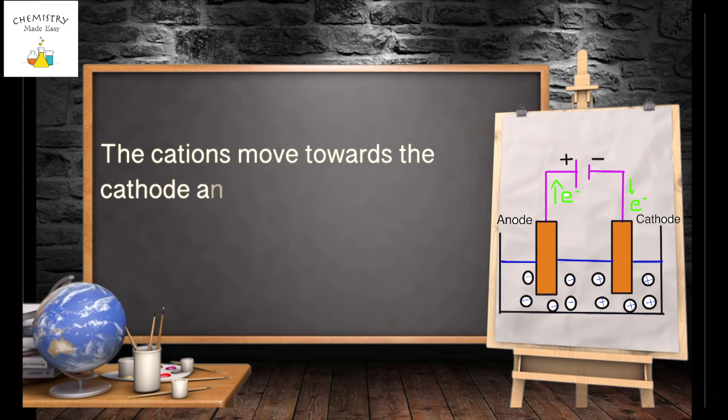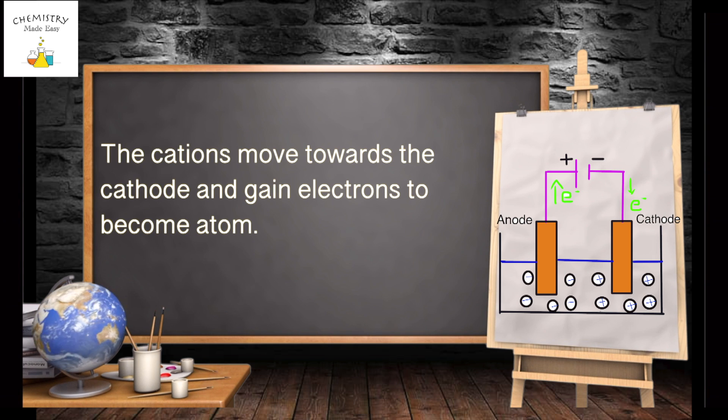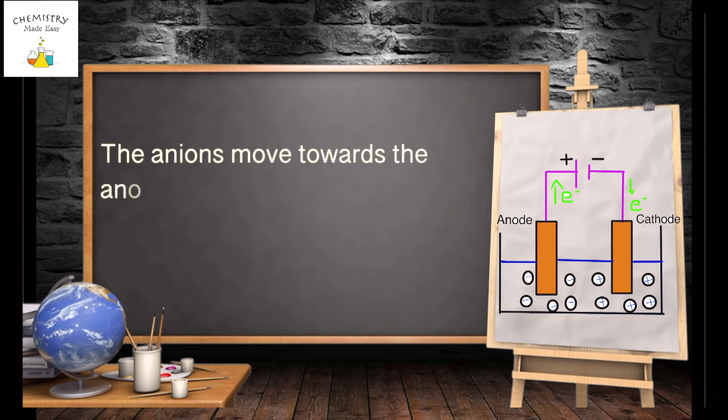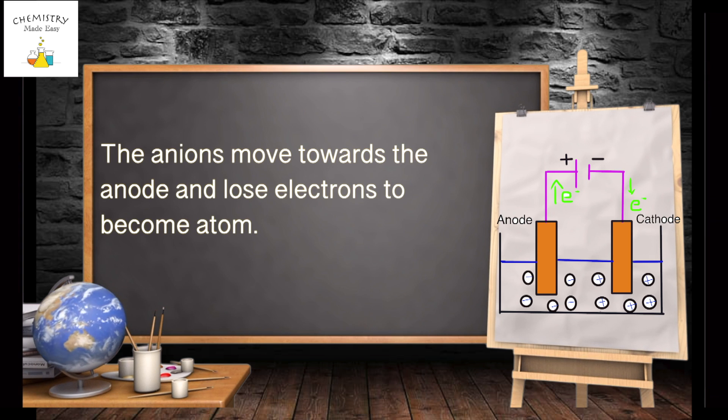The cations move towards the cathode and gain electrons to become atom. The anions move towards the anode and lose electrons to become atom.